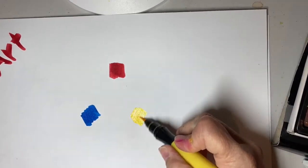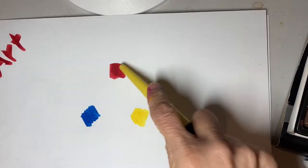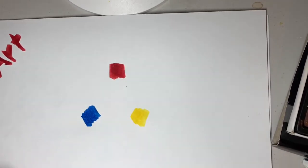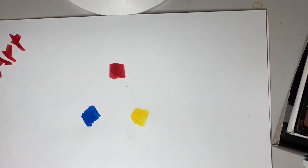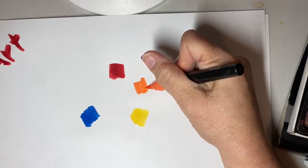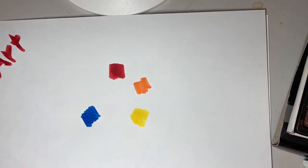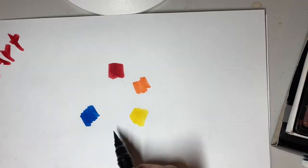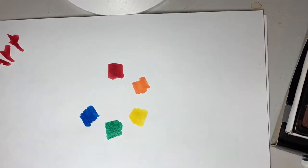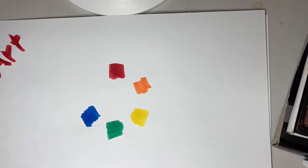And when you mix these colors together, when you mix red and yellow together, you get orange. When you mix yellow and blue together, do you know what you get? That's right, you get green. And then when you mix blue and red together, what do you get? Purple!